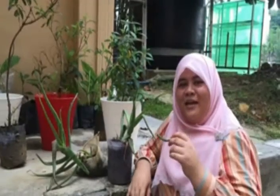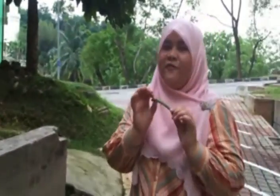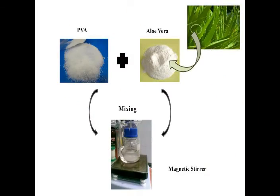So now let's go to the lab to see how aloe vera will be formed into a membrane. The PVA powder will be added with aloe vera powder and mixed using a magnetic stirrer. After mixing, it will be processed using the electrospinning machine.